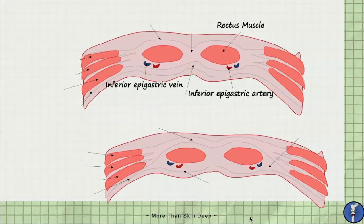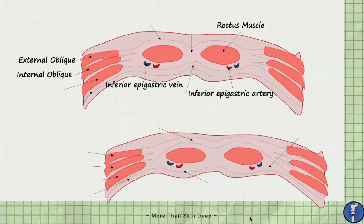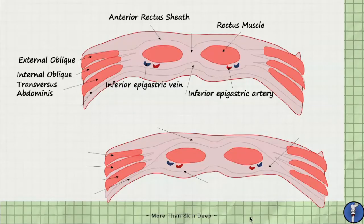The main change above and below the arcuate line is which muscle layers are continuous with the anterior rectus sheath, superficial to the rectus abdominis muscle, and which muscle layers are continuous with the posterior rectus sheath, deep to the rectus abdominis muscle. Above the arcuate line, the aponeurosis of the external oblique and part of the internal oblique continue as the anterior rectus sheath. The posterior rectus sheath is comprised of a posterior division of the internal oblique aponeurosis, the transversus abdominis aponeurosis, and the transversalis fascia layer.